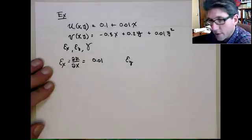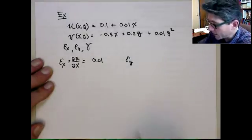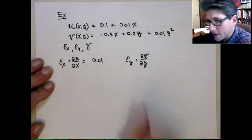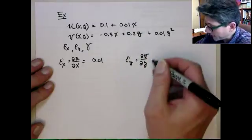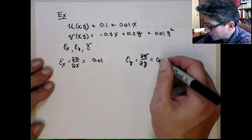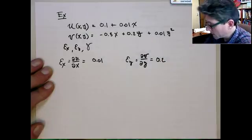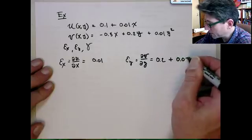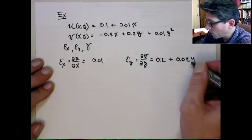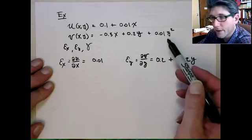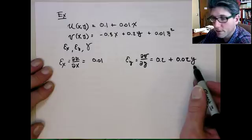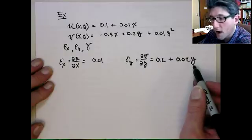Likewise, we can compute the normal strain in the y direction. That's the partial of v with respect to y. And if we do that, that gives me 0.2 plus 0.02 times y, the derivative of the second term. So in this case, you can see that the strain, the normal strain in the y direction is a function of position. It's a linear function of y, so it's not constant.